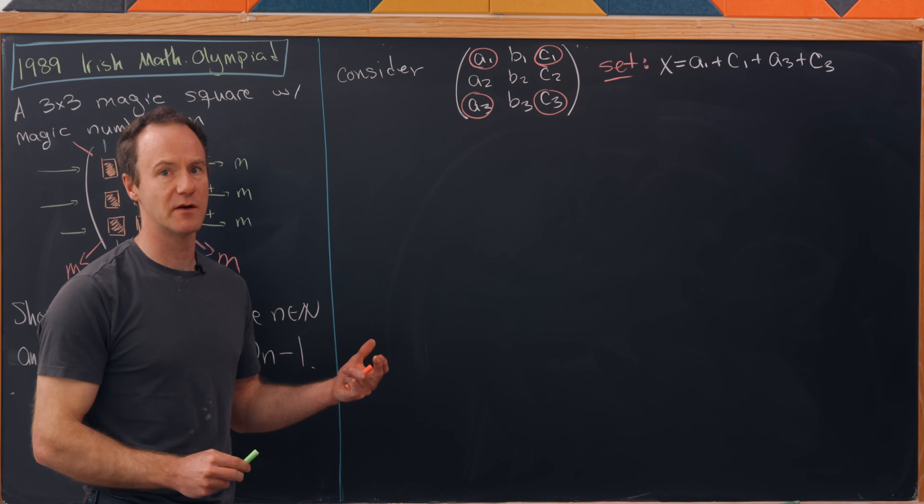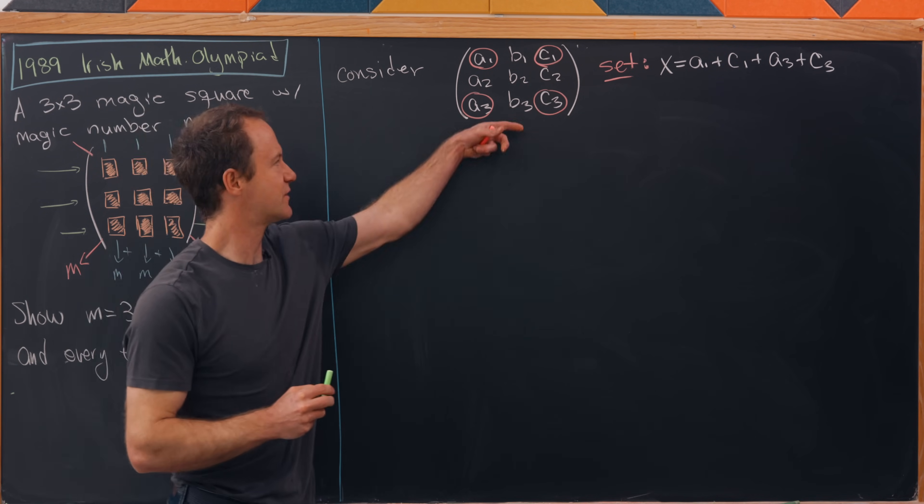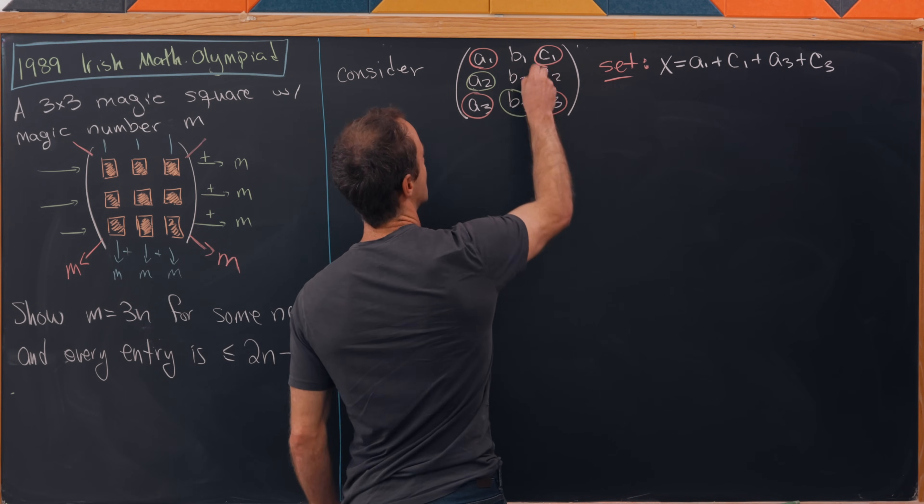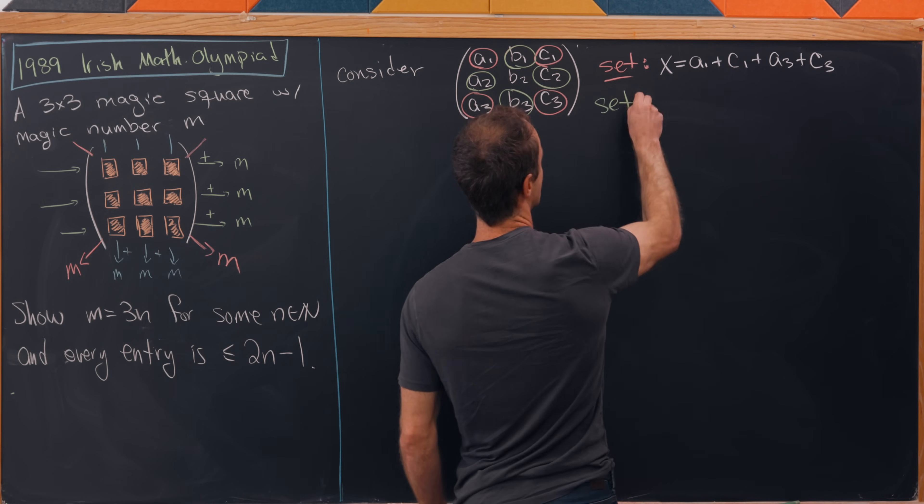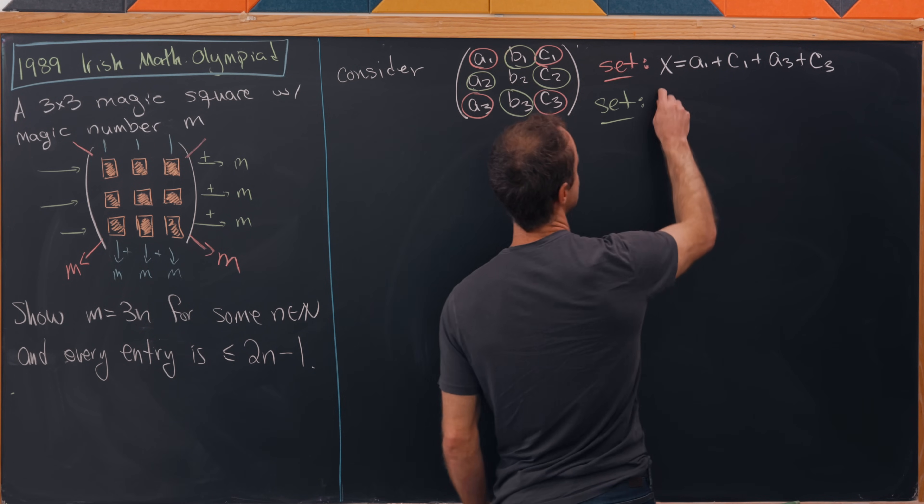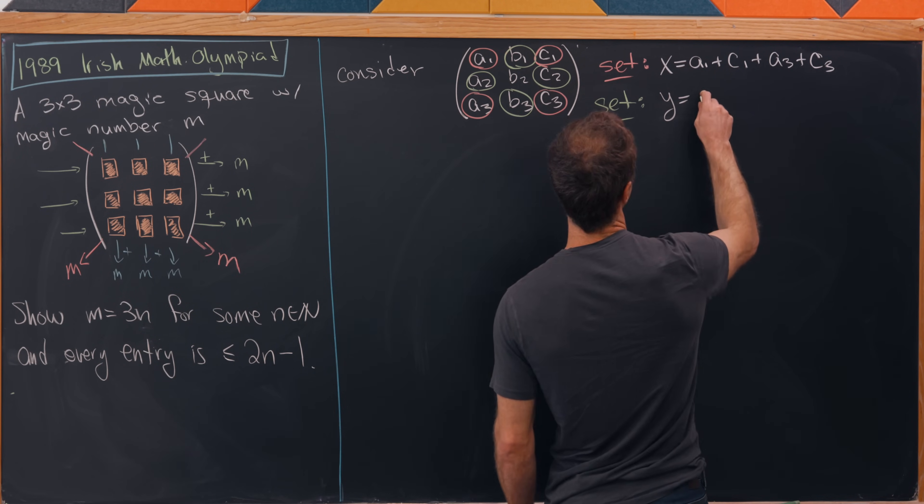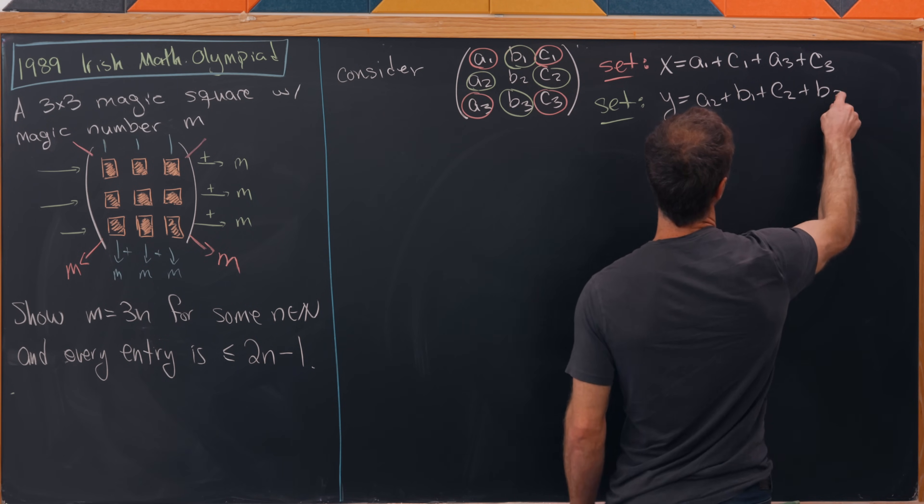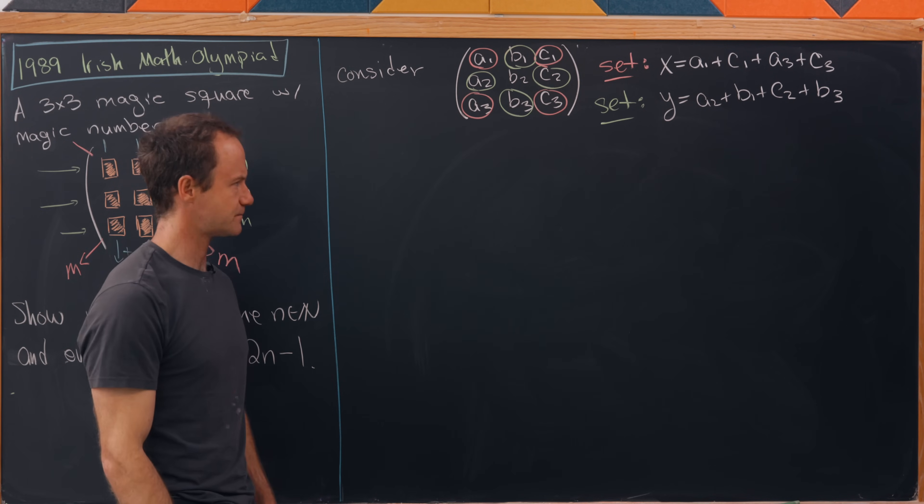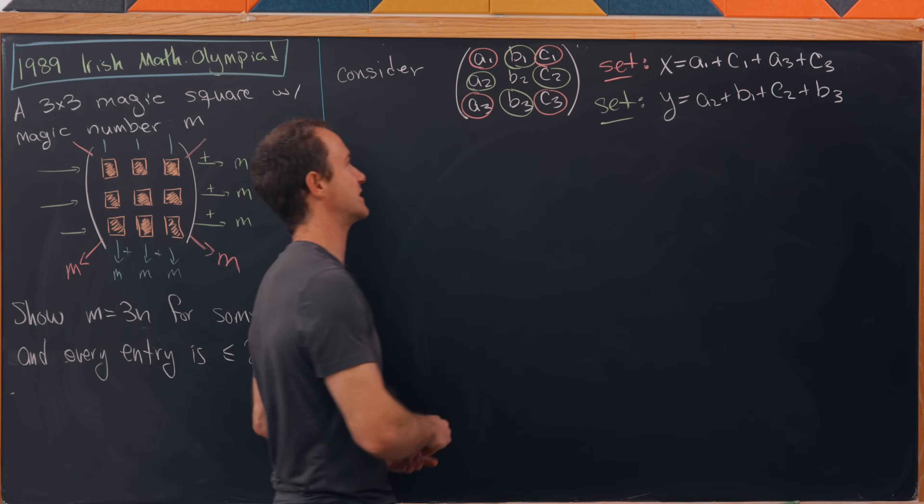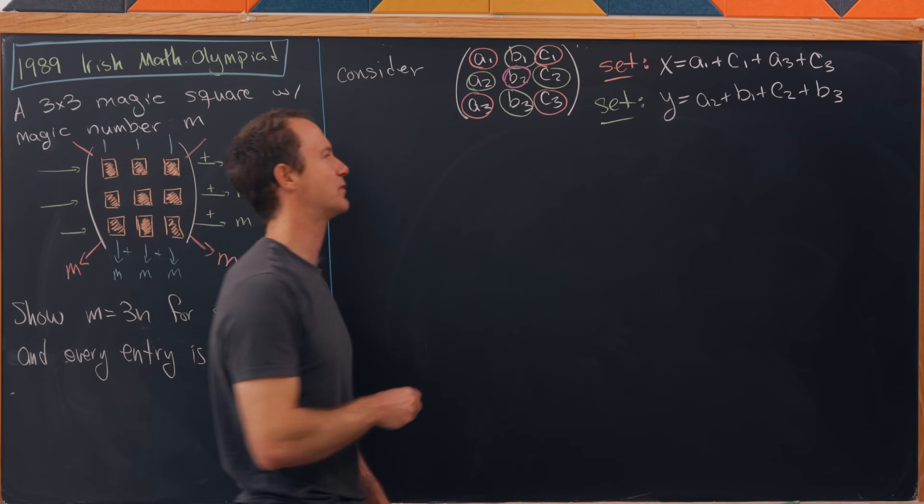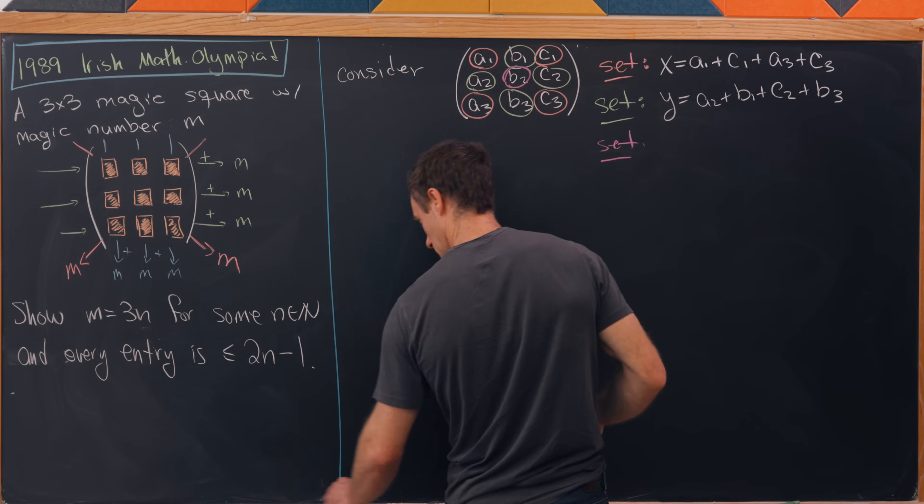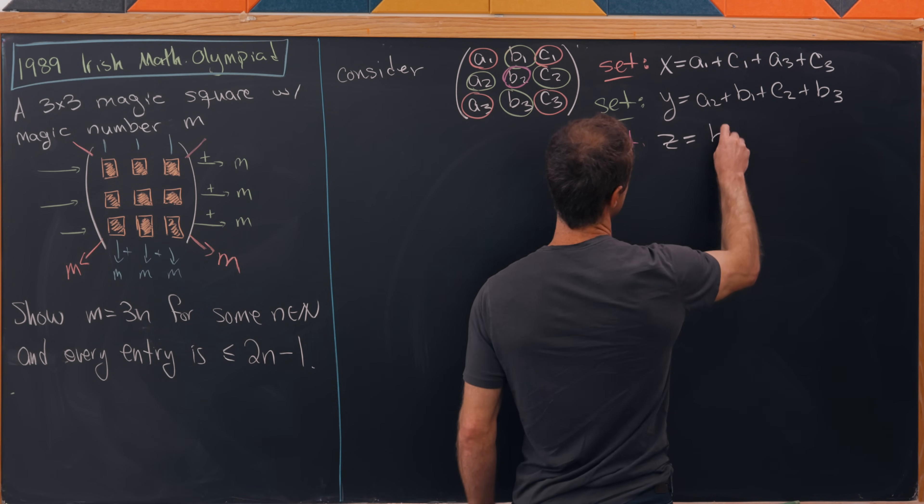Next I'll look at the sum of what I'll call the midpoint entries. Those are the midpoints of each of the edges, if you will. Let's set those equal to y, so that's going to be a2 plus b1 plus c2 plus b3. And then we've got one more entry, the center entry, and let's set z equal to just b2.